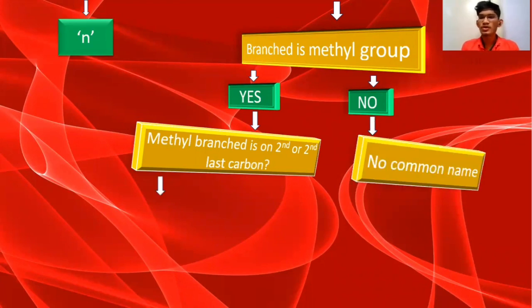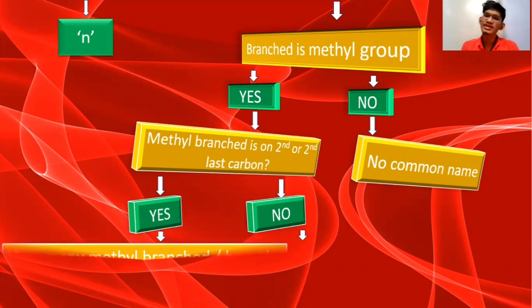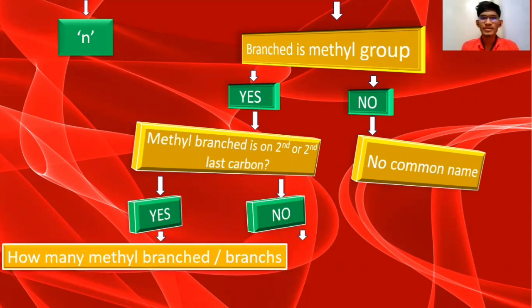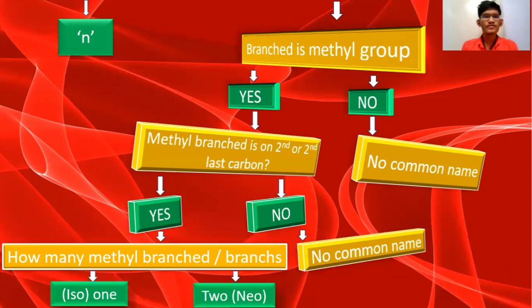If it does belong to a methyl group, check whether the methyl branch is on the second or second-last carbon. If it is not, write no common name. If it is on the second or second-last carbon, check how many methyl branches are there. If there is one, add the prefix iso before the alkane name. If there are two, add the prefix neo.